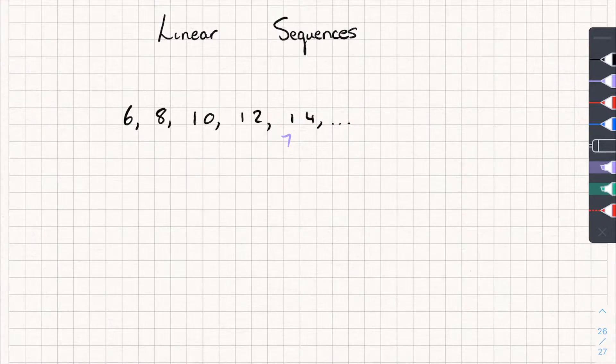Now, the only other word you might hear sometimes is term. So each number in the sequence, like this one is the first term, this one is the second, this is the third. So each number in the sequence is called a term.